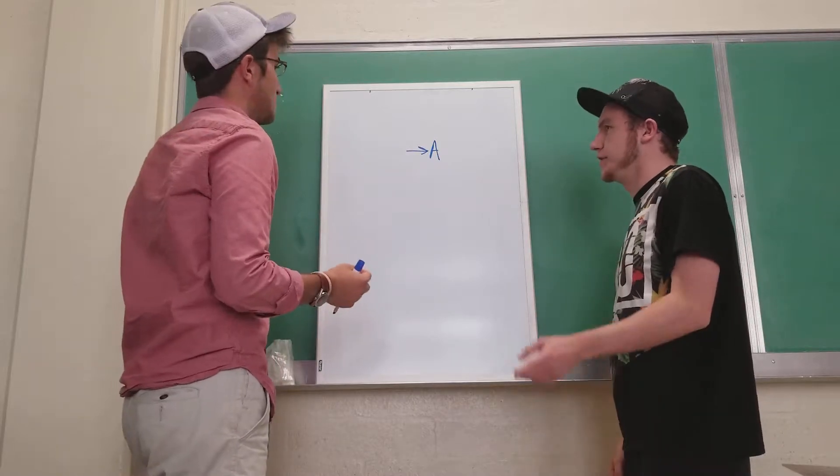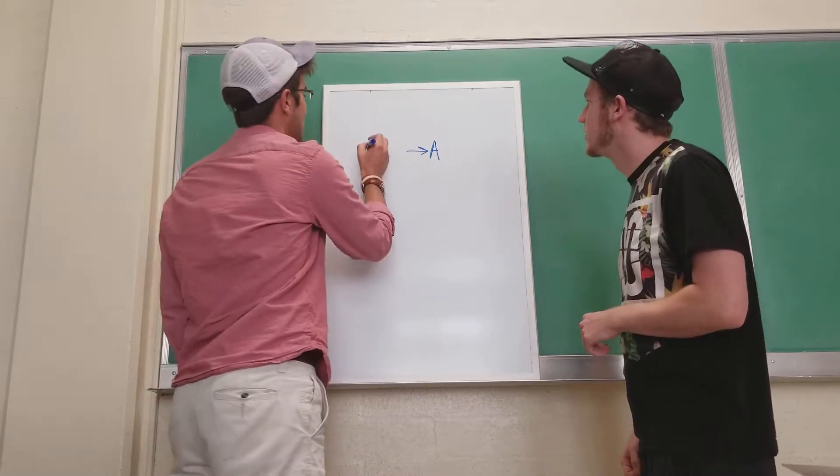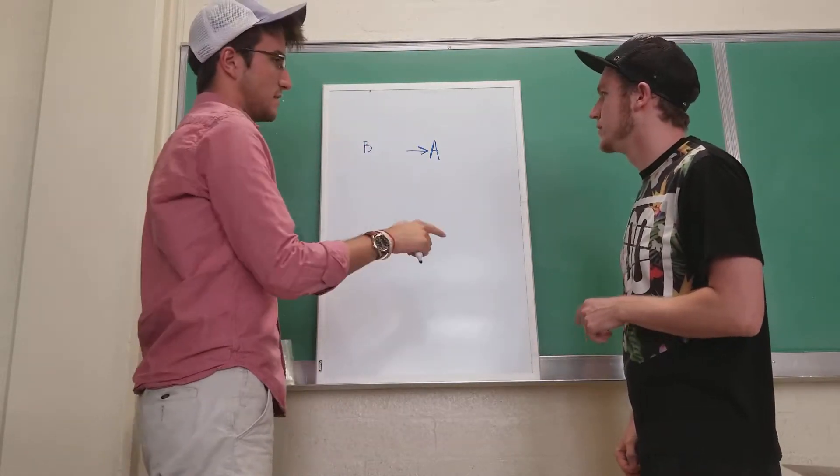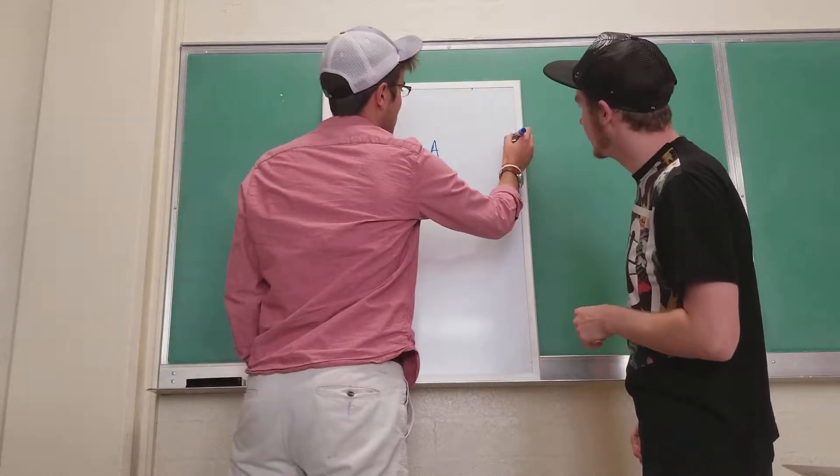Okay, and then B, we're moving away from it. But it's still further from A, right? So you can just put it a little further back. And then we're moving towards C as well. But it's really far away. So we can just put it on the edge over here.